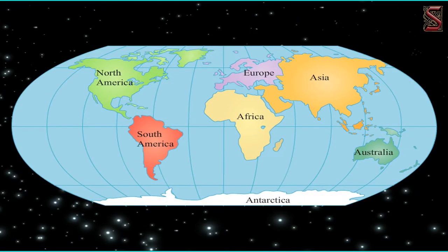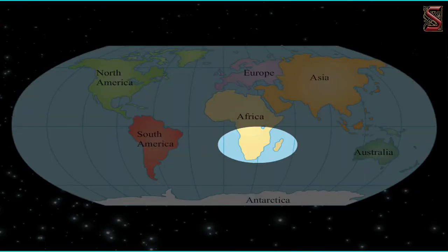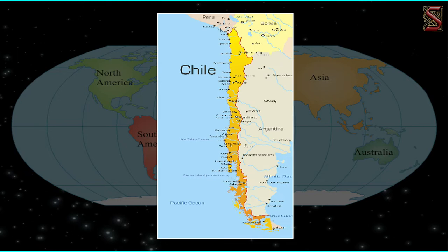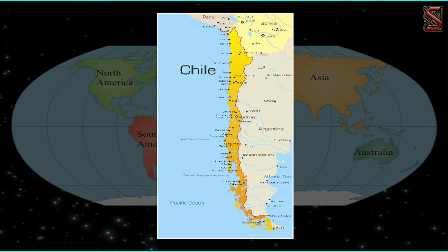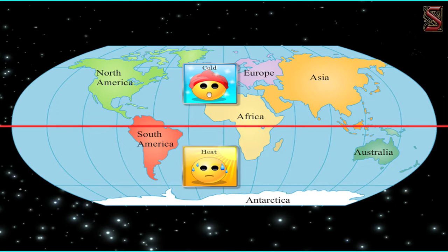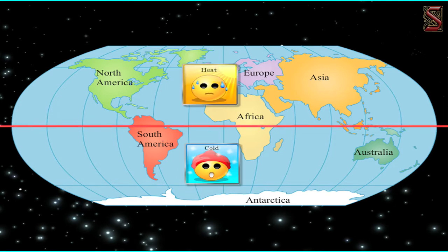Can you guess what is meant by southern continents? Countries like Australia, South Africa, and Chile are also known as countries of the southern continents due to their location south of the equator. The seasons in the south of the equator are opposite to our seasons. In other words, when there is summer here, it is winter in the countries of the southern continents, and vice versa.